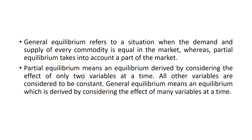Partial Equilibrium means we are talking about an individual firm and individual commodity — that means other things remaining constant and we are looking towards only two variables. But General Equilibrium means we are looking towards the aggregate, meaning we are talking about the entire market, the whole market.